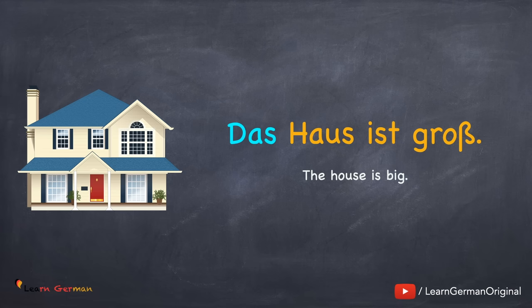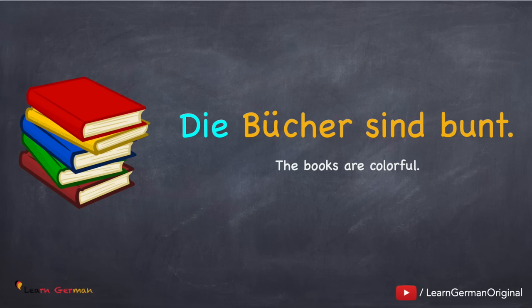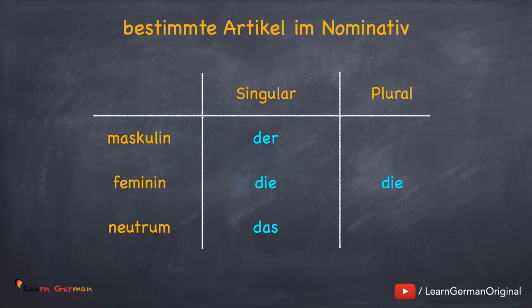Let's look at the plural article. Die Kinder spielen. Similarly, the next sentence: Die Bücher sind bunt. As you can see, the article for plural is the same as that for feminine. Die bestimmten Artikel im Nominativ — let's look at this table to understand this better. In singular, the article for masculine is der, for feminine die, and for neutral das. The article in plural does not depend on the gender — it's always die.